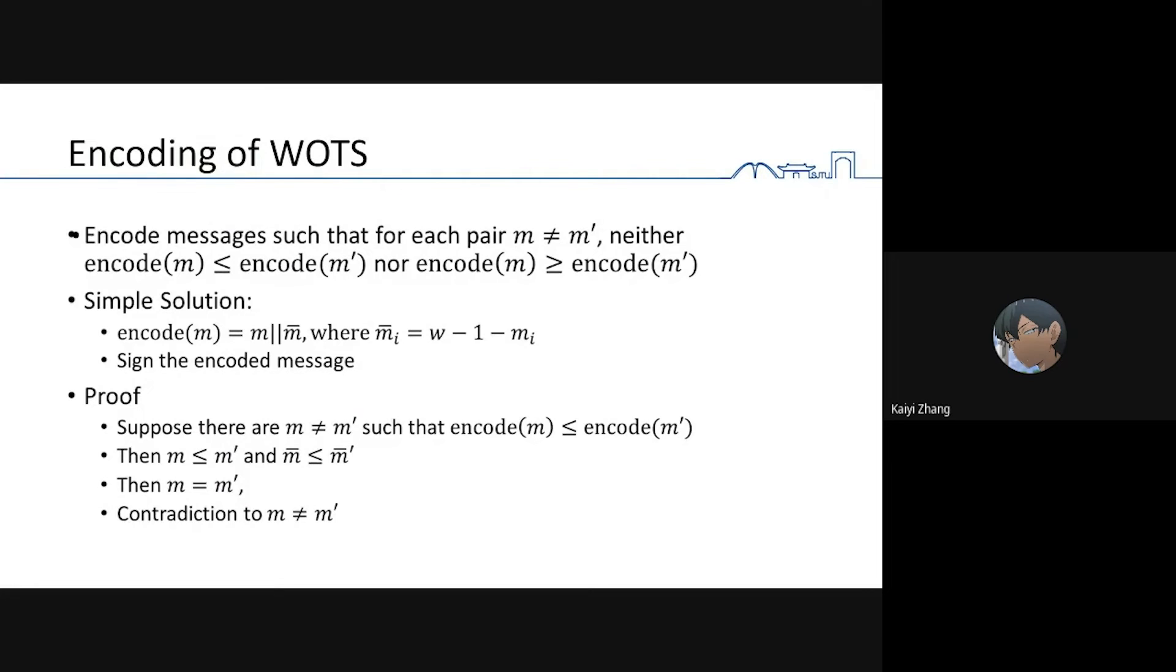So how to fix it? There is a simple solution. Instead of encoding the original message, we encode the encoded message. We need to ensure the encoded message is incomparable. We can append a complementary message to our original message, where the complementary m i is w minus 1 minus m i.